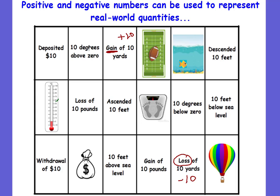Let's look at temperature. We have ten degrees above zero — 'above zero' is your clue word, meaning it's going to be a positive ten. Remember, a thermometer is just like a number line except it's vertical. You have your zero, and the numbers above zero are positive; the numbers below zero are negative. So if we have ten degrees above, it's a positive ten. Ten degrees below zero would represent negative ten.